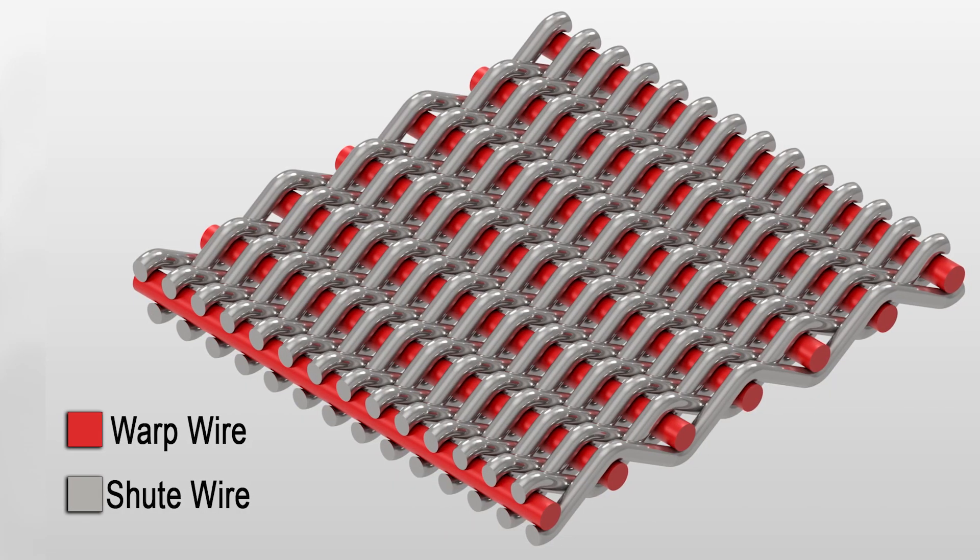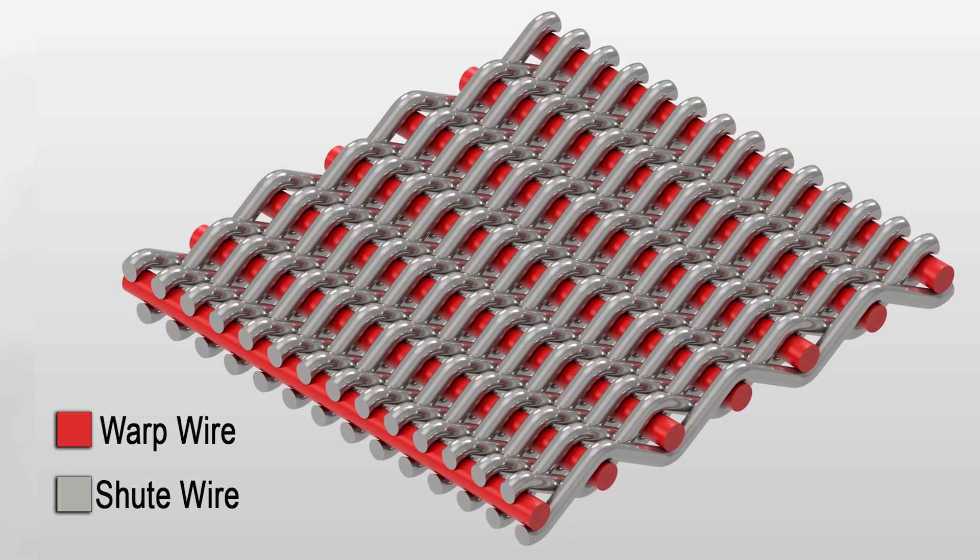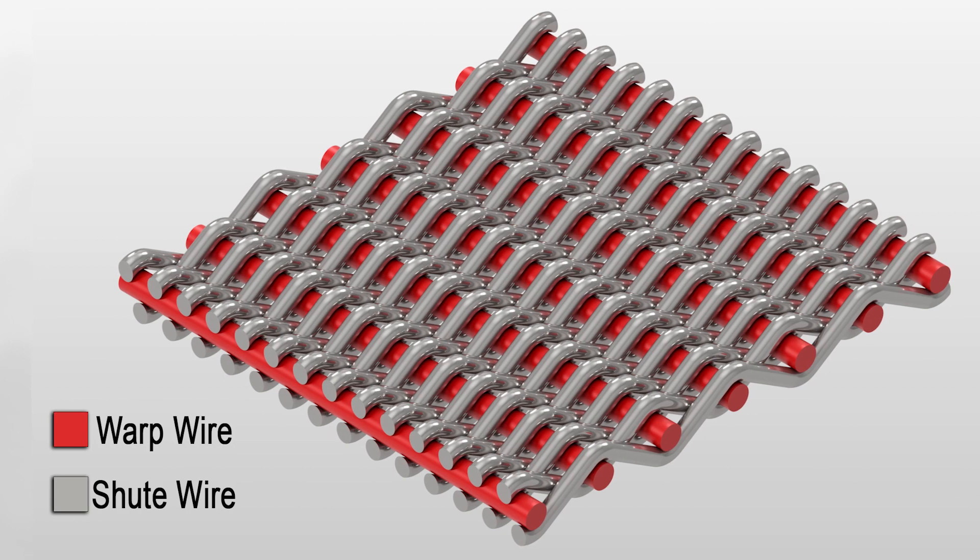This brings us to the category of weaves known as Dutch weaves. Rather than using identical wire counts and diameters in both directions, Dutch weaves use combinations of thick and thin wires to form a tighter weave. This unbalanced wire configuration allows for a variety of complex patterns to be used that can increase density and filtration capabilities while also controlling for mechanical strength.